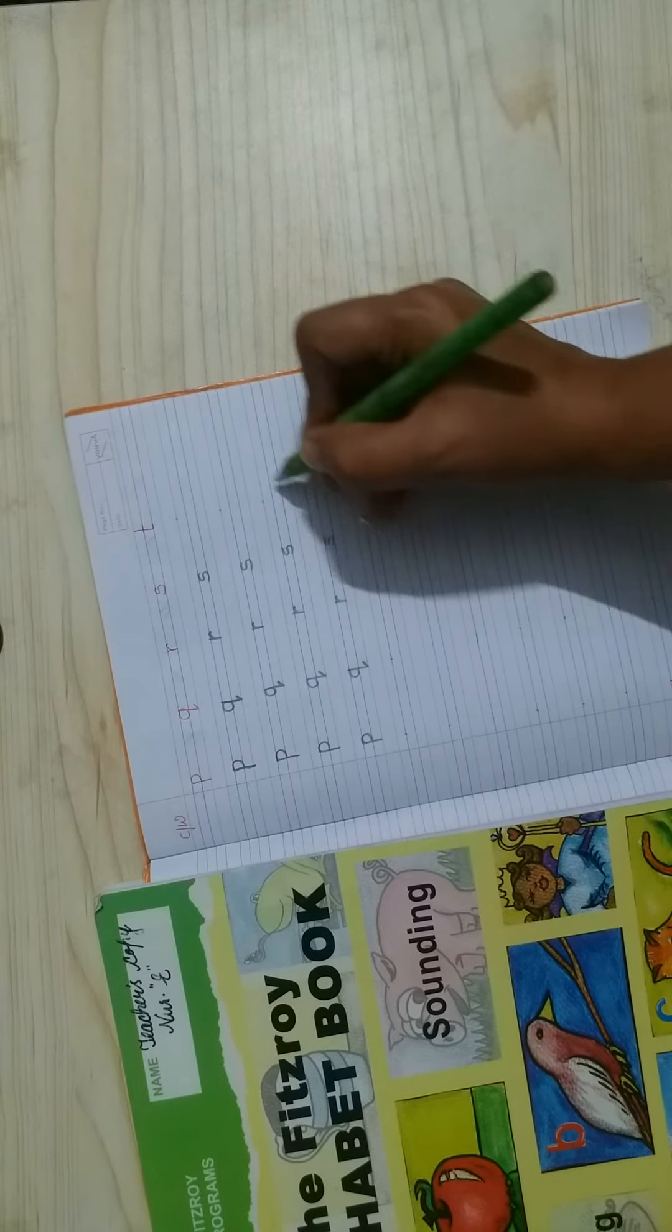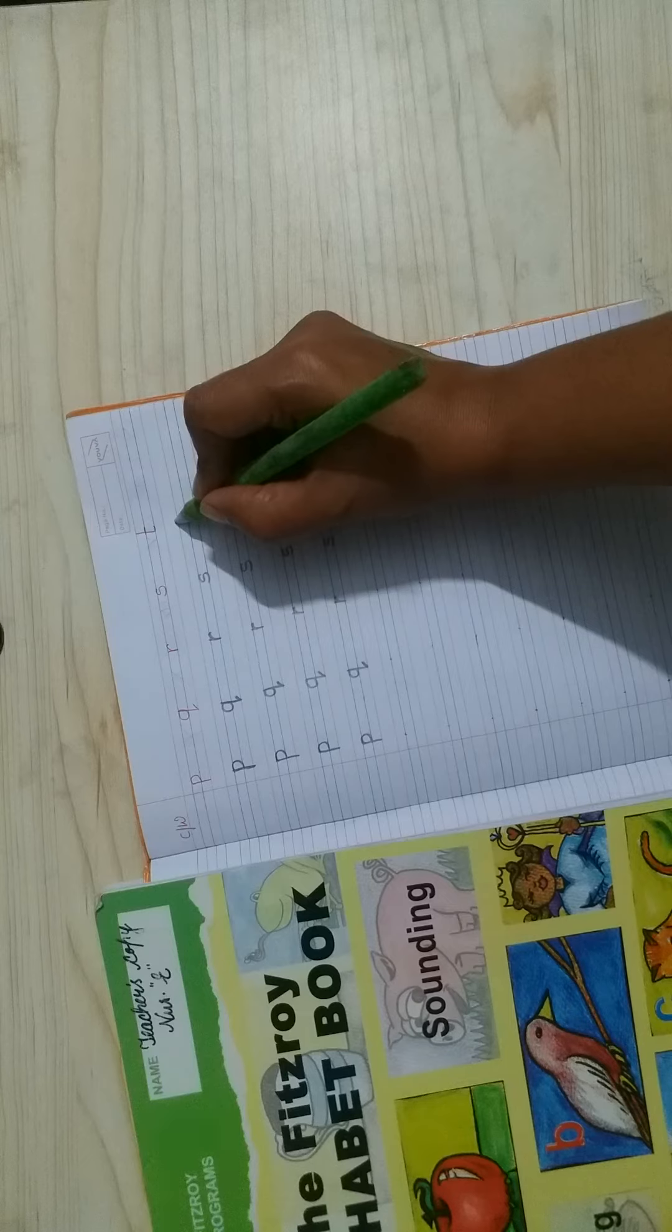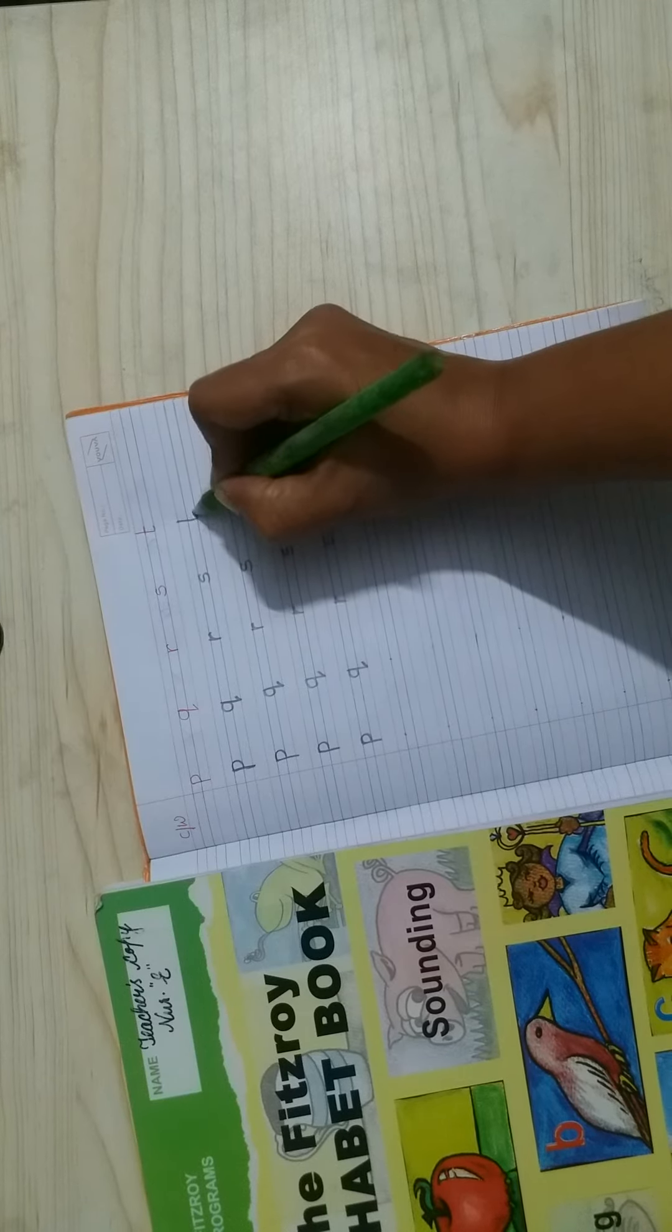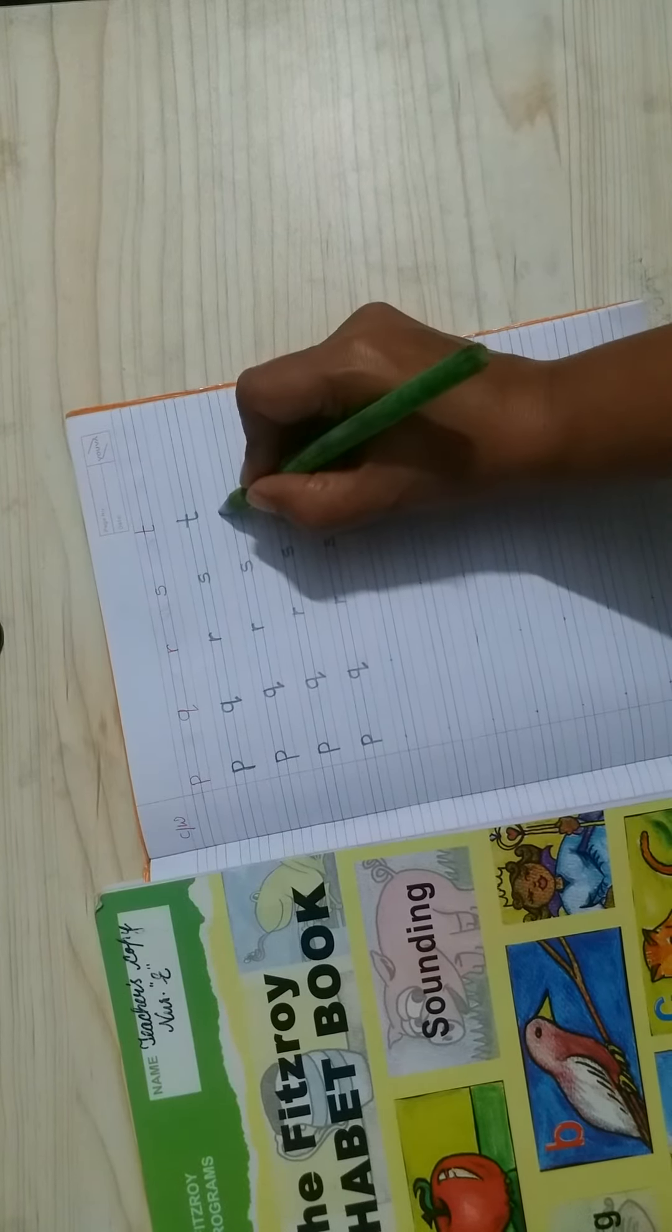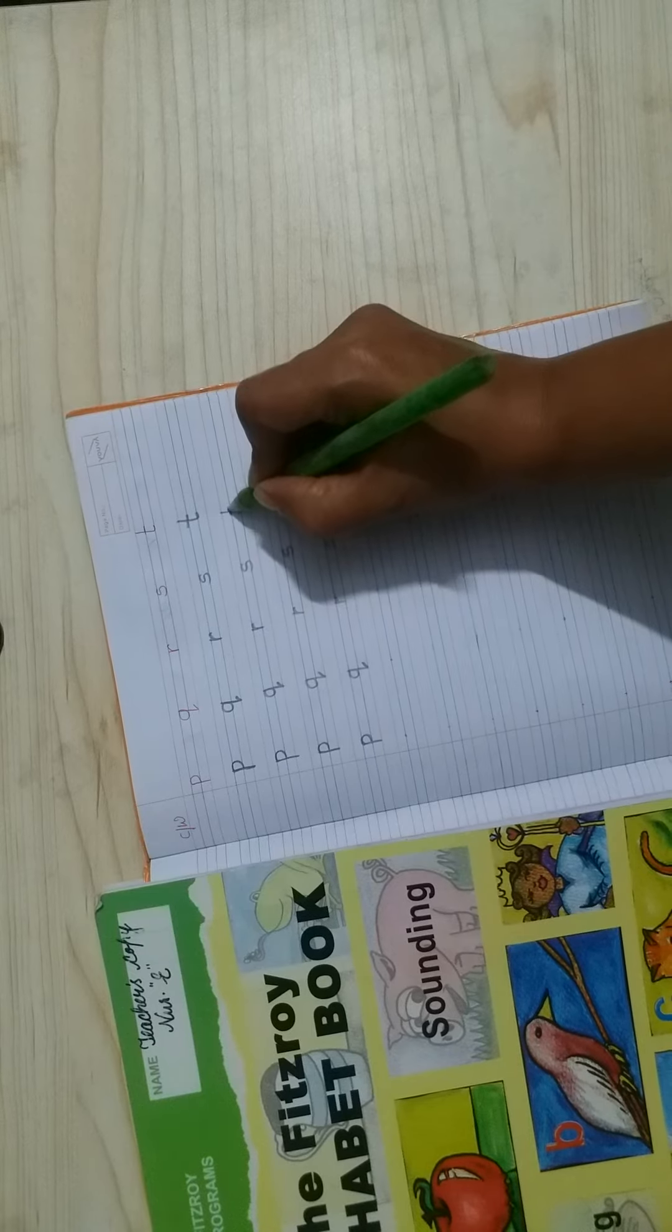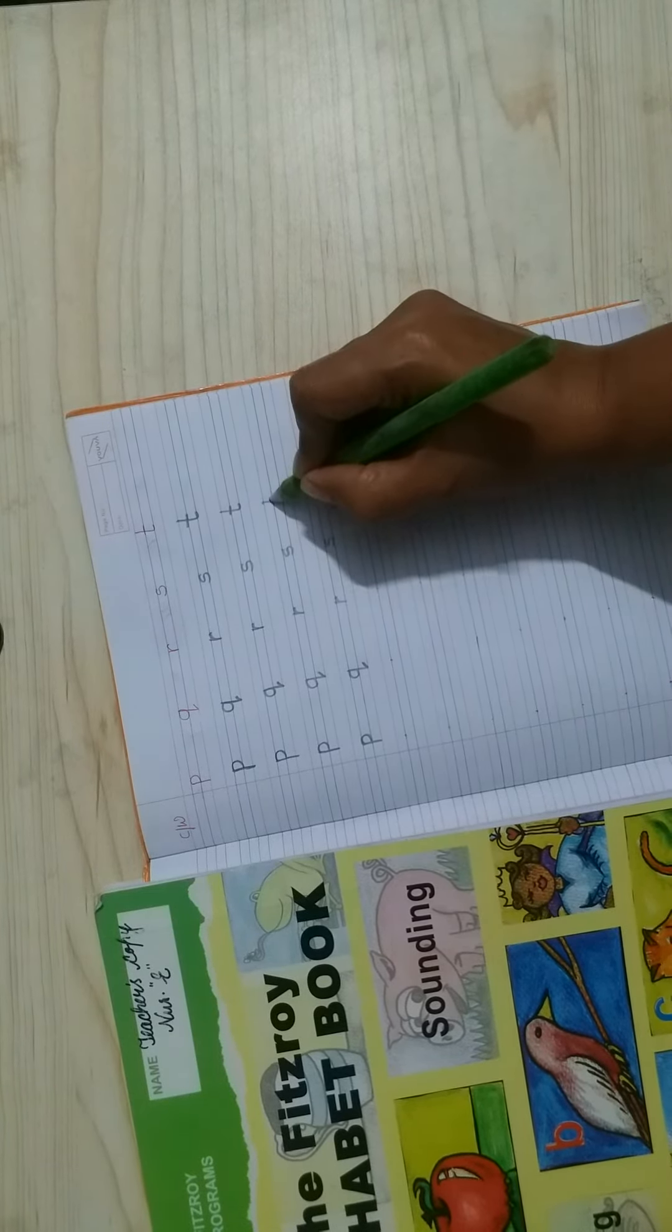Now, next is t. Make standing and then slipping. T for tree. T for teapot.